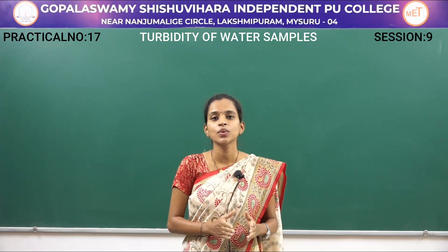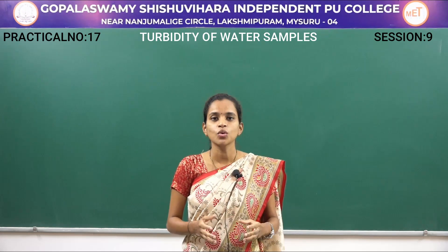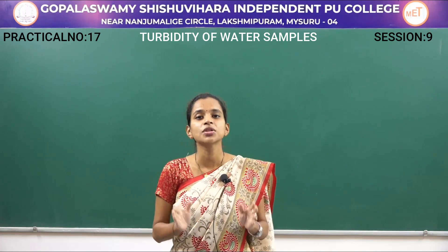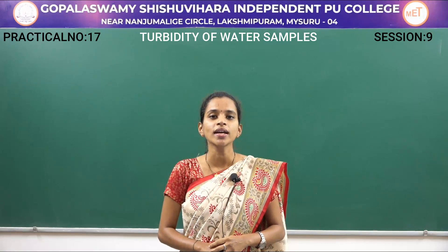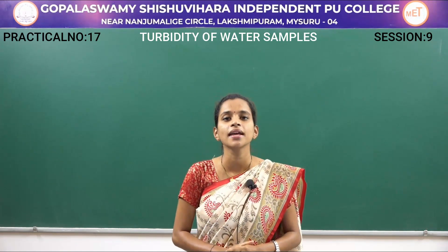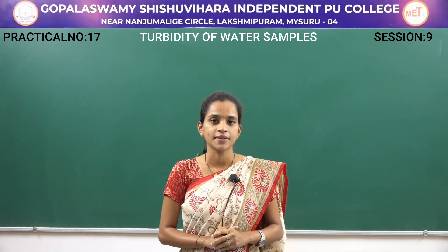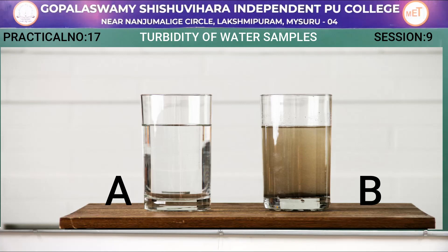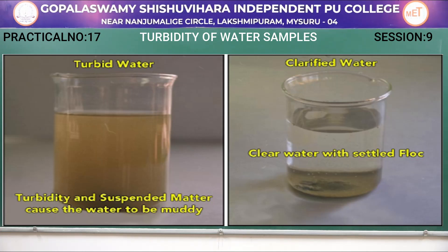Once the measuring jars are filled with 500 ml of water and labeled A and B, place them undisturbed overnight without moving them. What you can see on screen is the undisturbed measuring jars A and B placed overnight. By leaving them undisturbed, the sediment present in the collected water settles and gets collected at the base of the measuring jar.